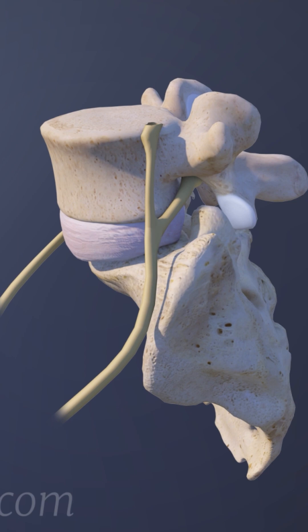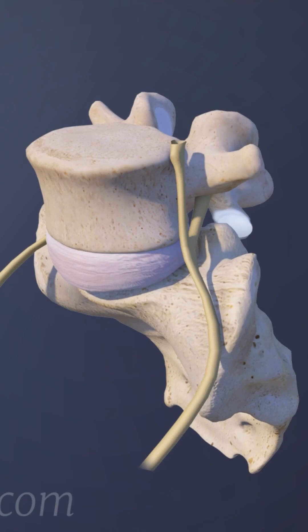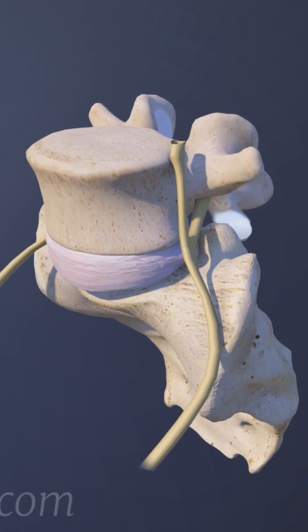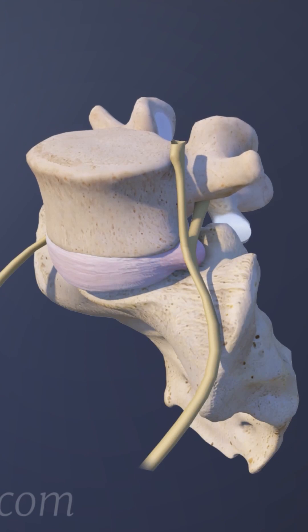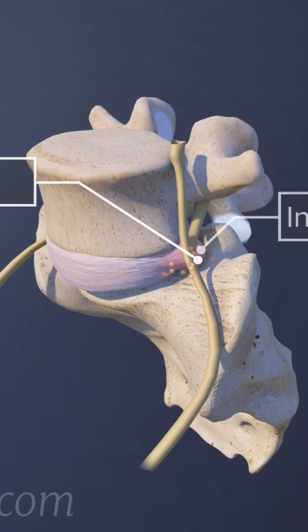L5S1 Degenerative Disc Disease causes pain through inflammation of the L5 spinal nerve. When the outer part of a disc breaks down, the inner portion of the disc can leak out, or herniate, and release inflammatory proteins that irritate the L5 nerve.